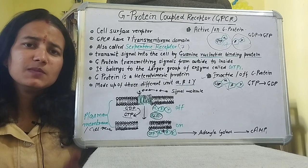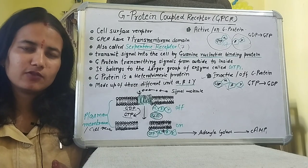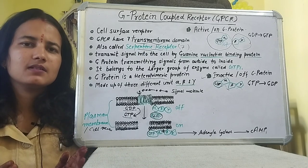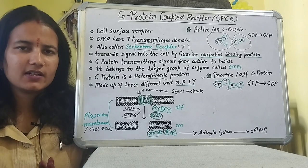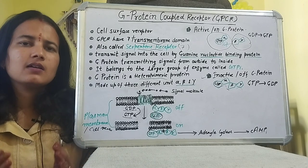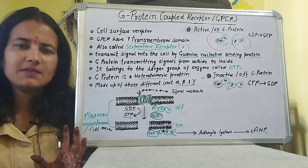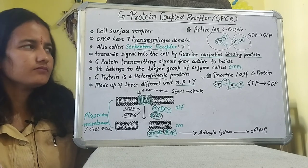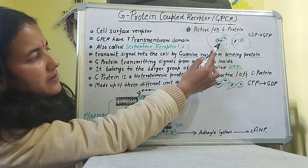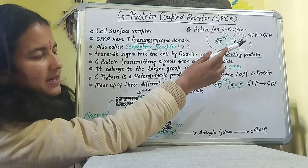When G-protein is active in a cell, the GDP bound to it is converted to GTP. In this active GTP-bound state, the alpha subunit separates from the beta and gamma subunits.